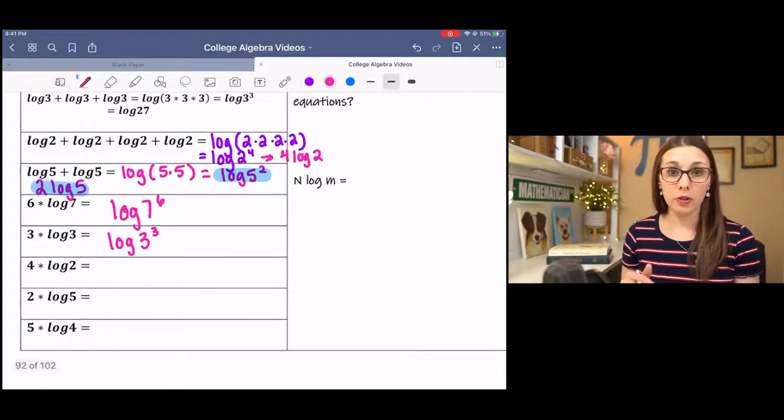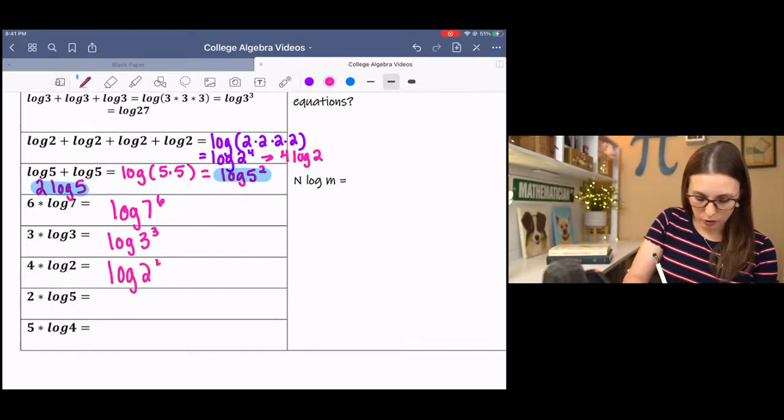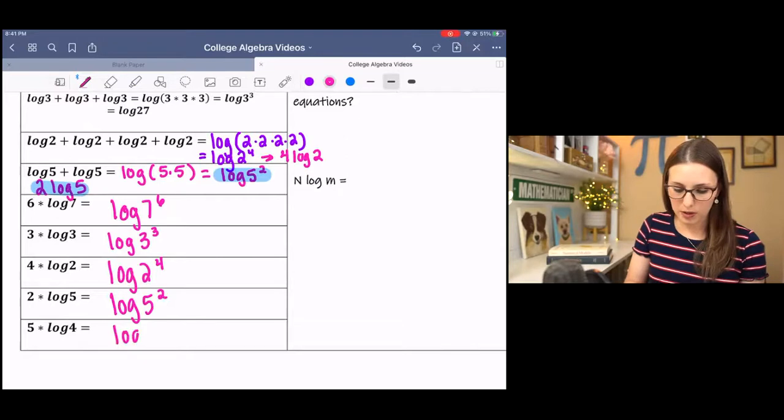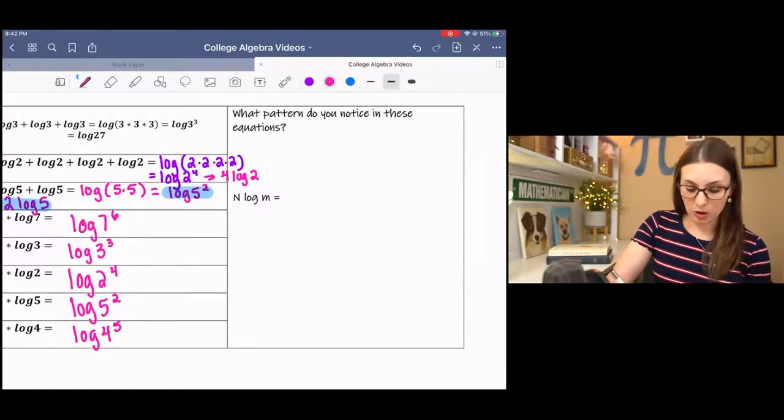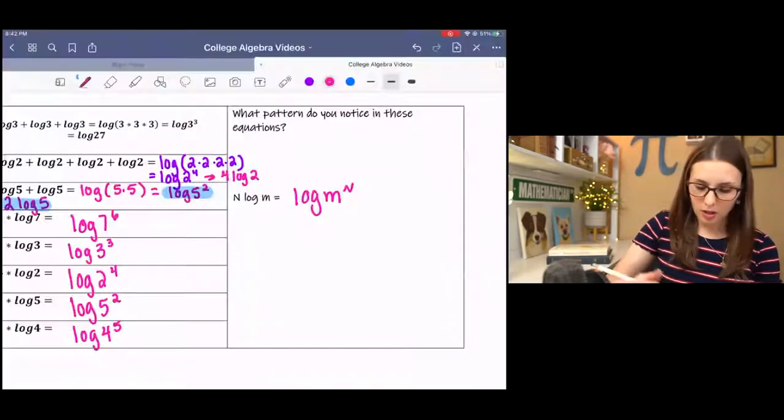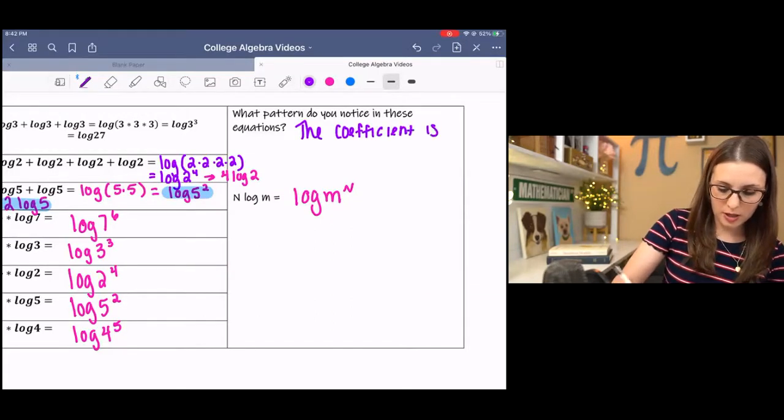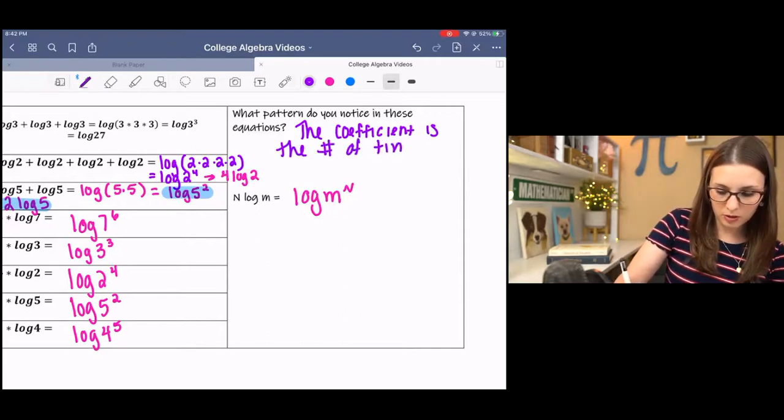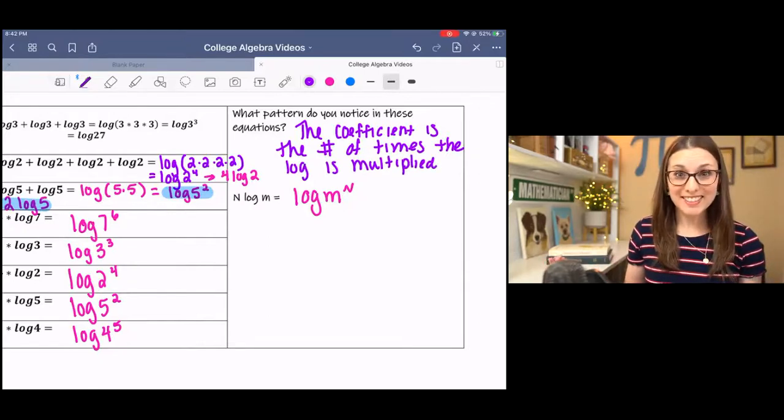Pause the video and fill out the rest of the table, and then come back and check. You should get log 2 to the 4th, log 5 squared, and log 4 to the 5th. So what's happening is when you have a number out front, that's actually the exponent on the log, which means that the coefficient is the number of times the log is multiplied, which is the definition of an exponent. So it becomes an exponent.